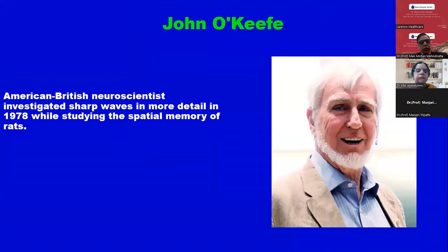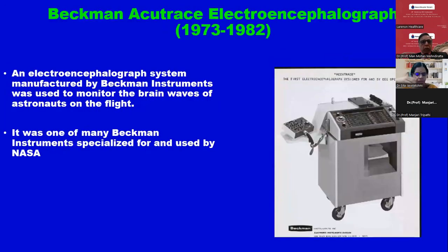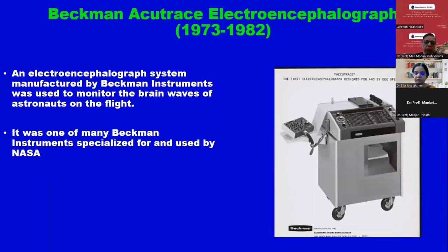An American-British neuroscientist investigated sharp waves in more detail in 1978 while studying the spatial memory of rats. Coming very close to modern times — an electroencephalograph system manufactured by Beckman Instruments was used to monitor the brain waves of astronauts in flight. Till now we were talking on the ground — first animal labs, then human neurophysiology labs, then it came to astronauts and was used by NASA.